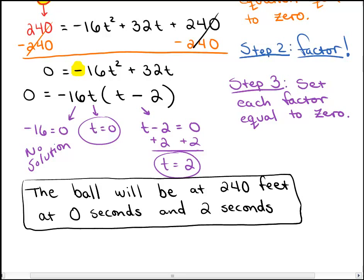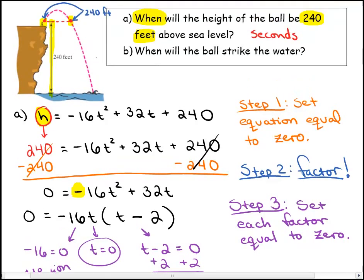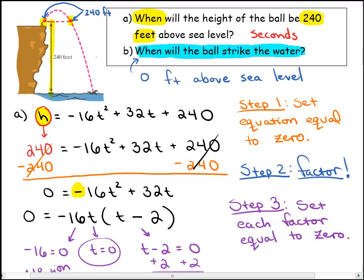We're not done — there's a Part B. Going back to the question: when will the ball strike the water? What will the height of the ball be when it strikes the water? Zero feet above sea level. So the ball will be zero feet above sea level, and that's all you have to do for Part B — substitute zero in for h.